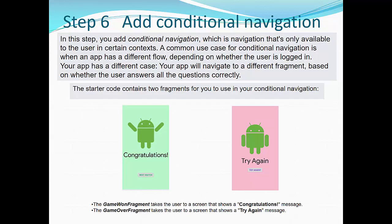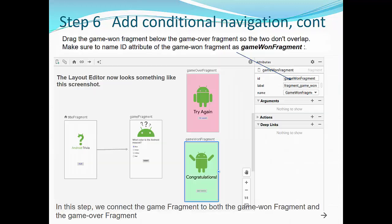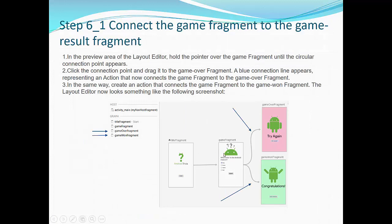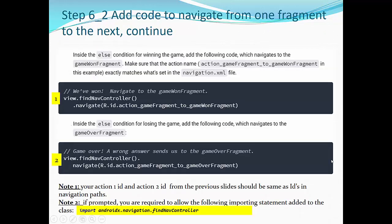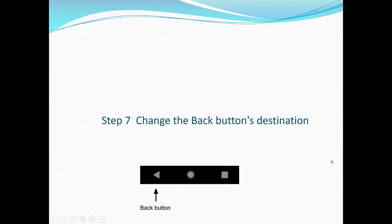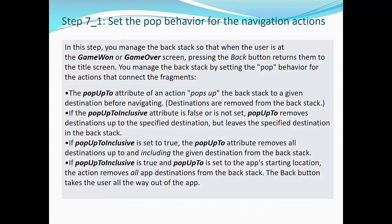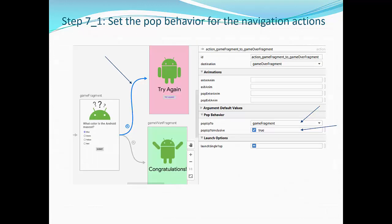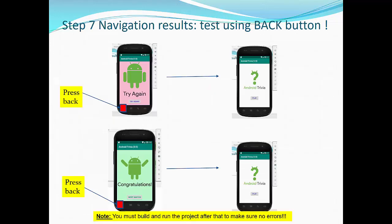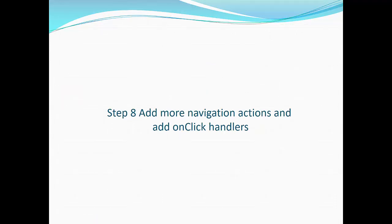Step six is conditional navigation. Conditional navigation is a bit harder — you have to implement logic to navigate from the game fragment to either the 'try again' fragment or the 'congratulations' fragment. Step seven is changing the back button's destination. The back button is typically the leftmost button at the bottom of the screen, and you will attach proper navigation actions to it. Step eight is adding more navigation actions and on-click handlers. The last buttons will be 'try again' and 'next match.'